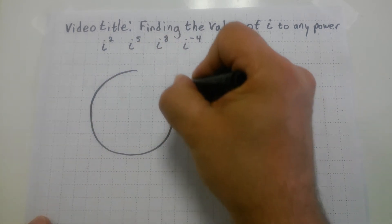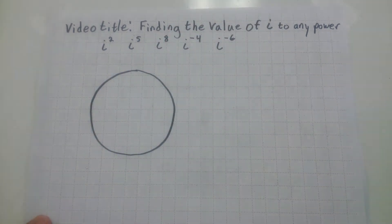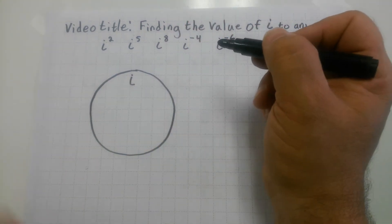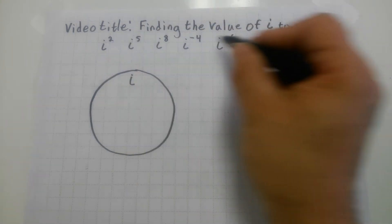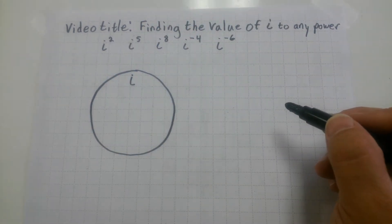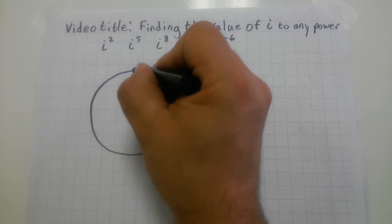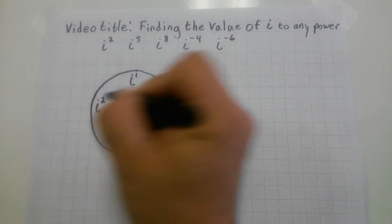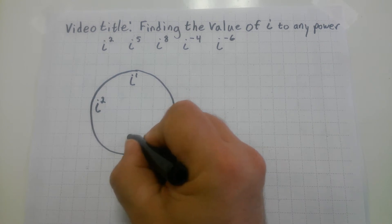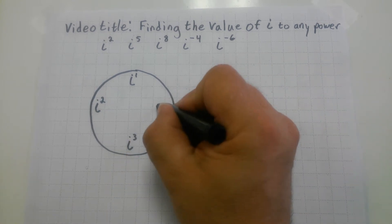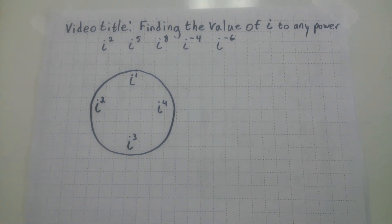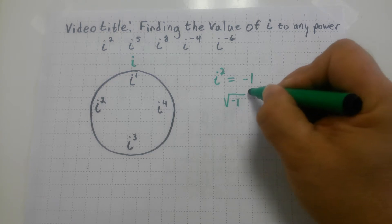This is a great note to write down before you take any big major tests like the SAT or ACT — there's probably going to be an i problem involved. I want to find i to the first, i to the second, i to the third, and i to the fourth. That's as far as I need to go. If I can find those values, I can find i to any power.